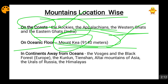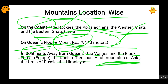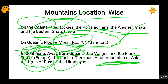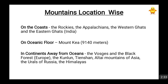Now there are some mountains which are inside the continents, away from the oceans. They are the Vosges and Black Forest in Germany, Europe. Then the Kunlun and Tianshan in China. The Altai mountains are majorly in Mongolia. Then the Ural mountains in Russia, and then the Himalayas — not only in India but also in Nepal and Bhutan.